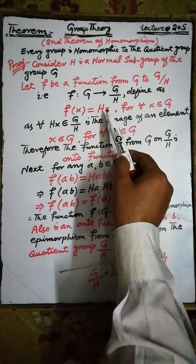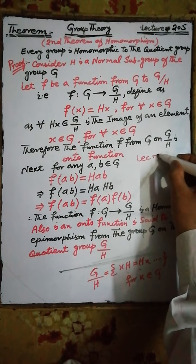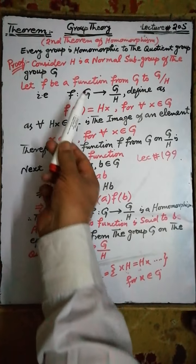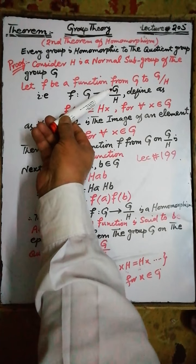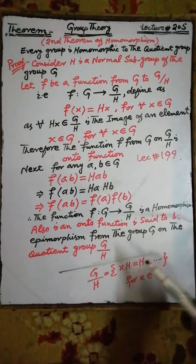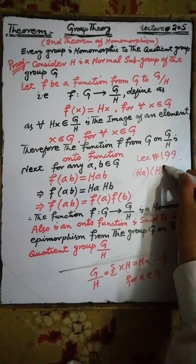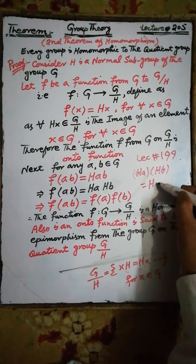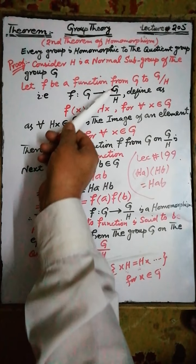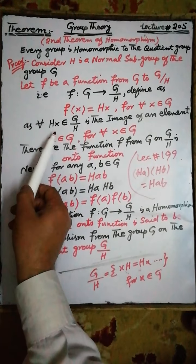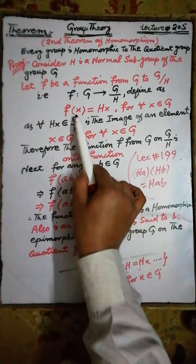As proved in our previous lecture, lecture number 199, the quotient group — that is, the set G by H consisting of all the left or right cosets — is a group with respect to the binary operation: HA multiplied by HB is equal to H multiplied by AB. Therefore, each element HX belonging to the group G by H is an image of an element X belonging to the group G.